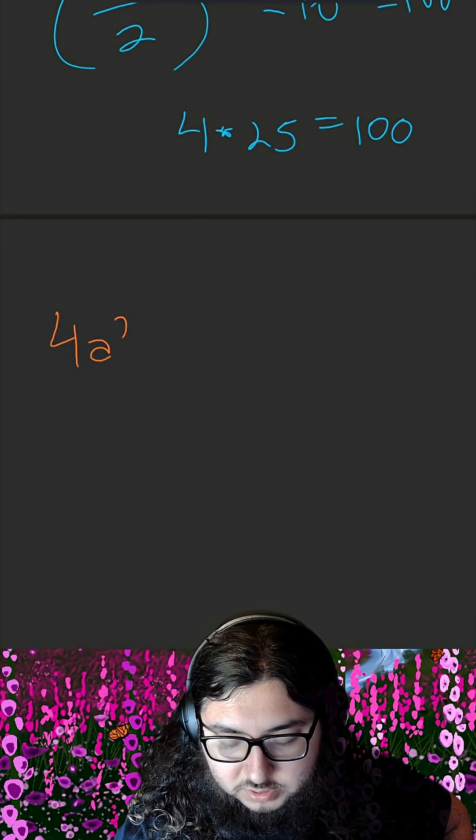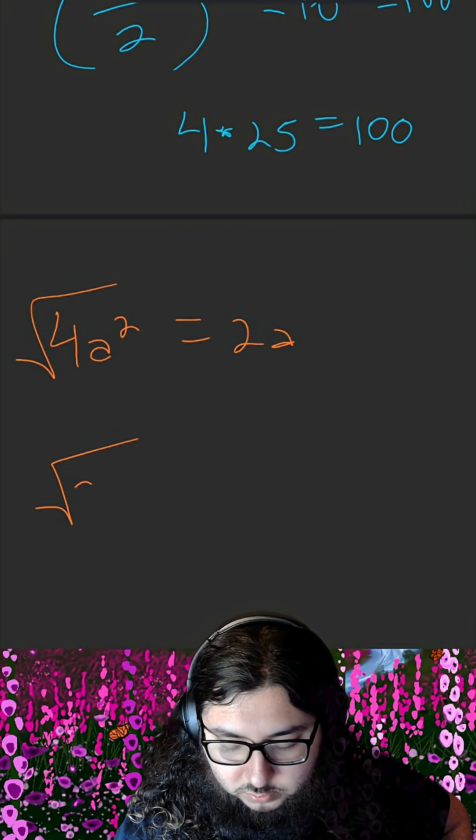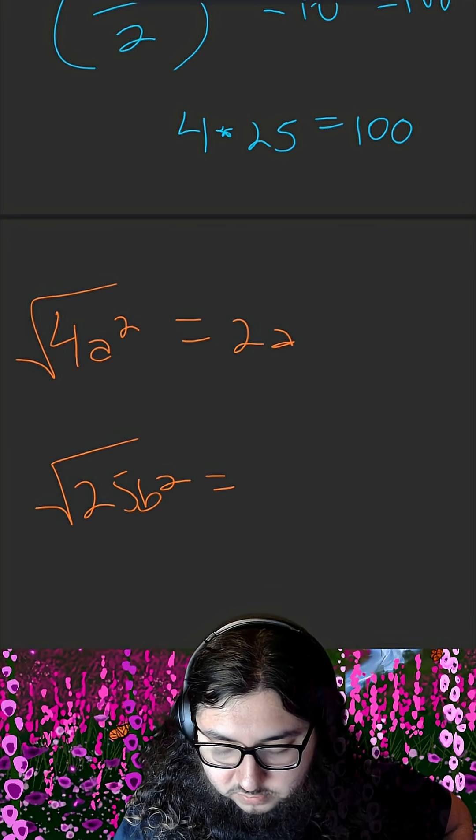The square root of 4A squared is just 2A. The square root of 25B squared is just 5B.